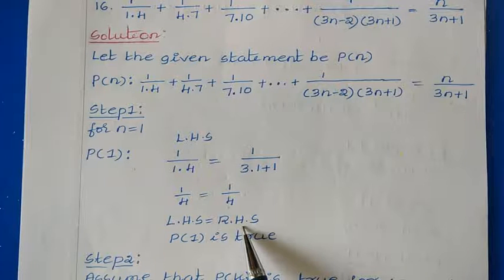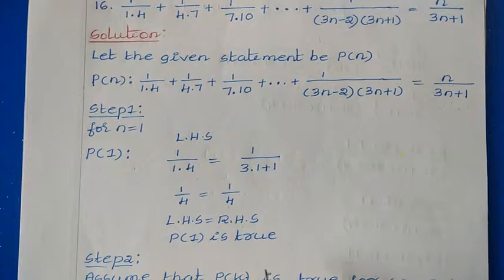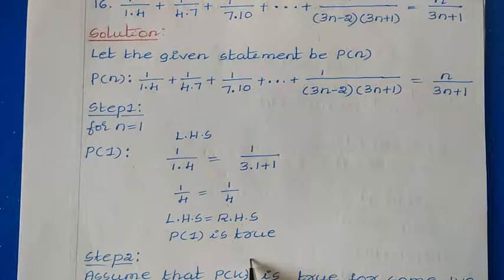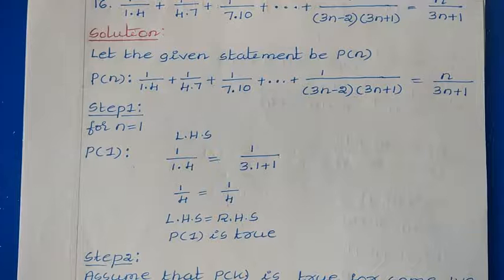So 1/(3×1+1) = 1/(3+1) = 1/4. Here also we have 1×4 = 1/4, so LHS = RHS. That means the given statement is true for n = 1, so P(1) is true and we can start the second step.